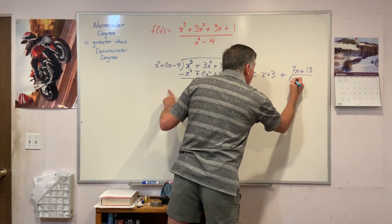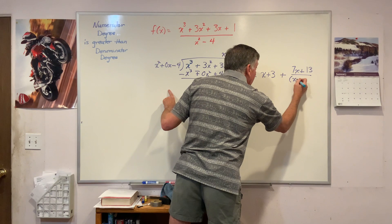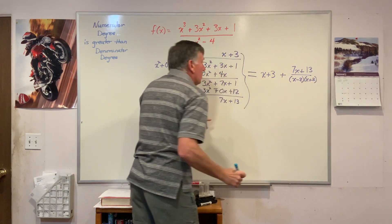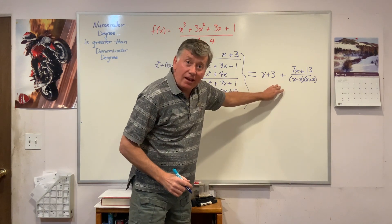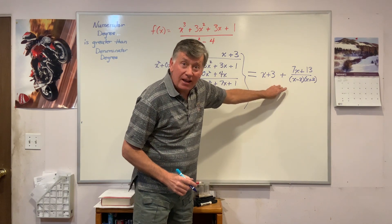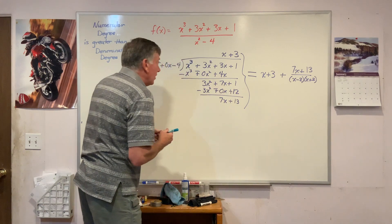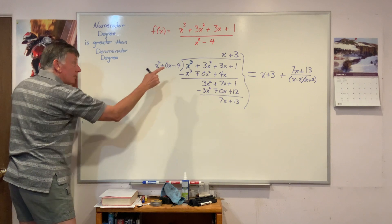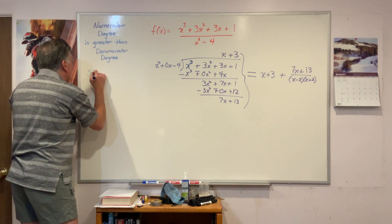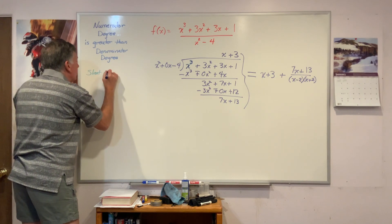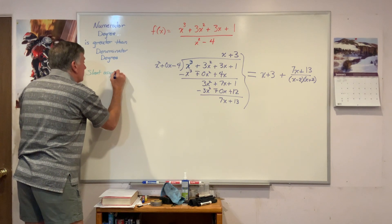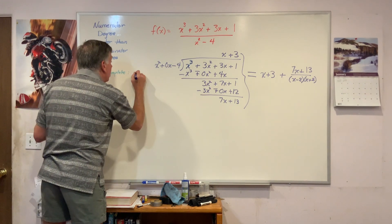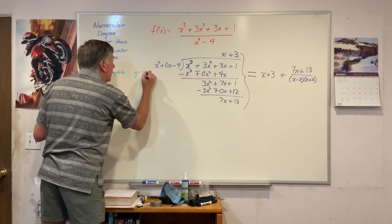I'm going to right now factor that x squared minus 4 is x minus 2 times x plus 2. Because now when I have this, I have all the information I need. Changing my pen color, I know that my - or it's not a horizontal now, it's a slant asymptote - is at y equals x plus 3.